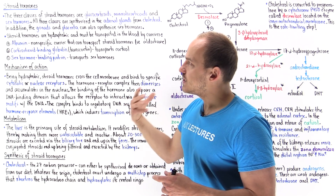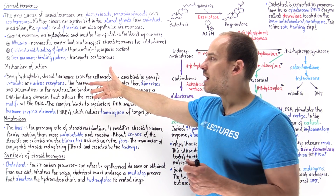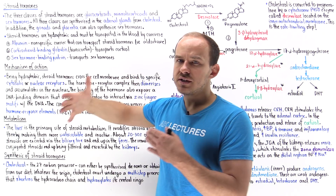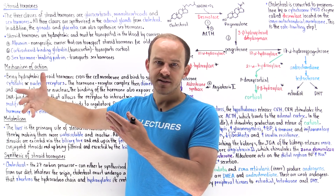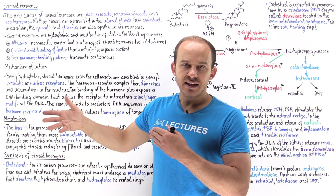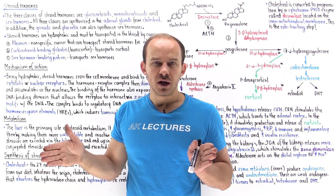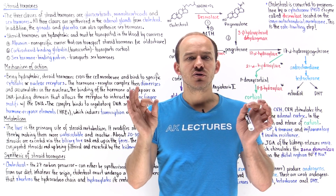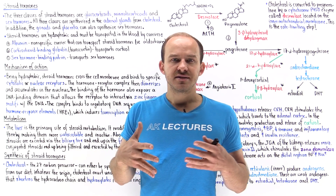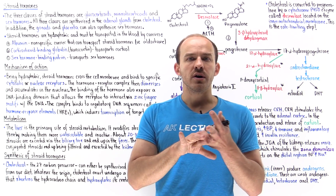Once a steroid hormone is synthesized and picked up by a carrier molecule, the carrier protein brings it to its target cell and releases it. Because the steroid hormone is hydrophobic, it can simply diffuse across the mostly hydrophobic cell membrane.